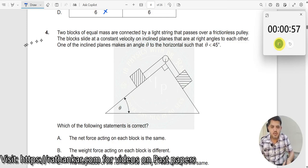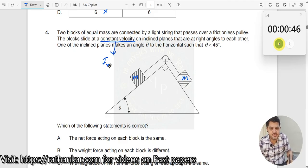Question number 4: two blocks of equal masses are connected by a light string, equal masses. For the frictionless pulley, the two blocks slide at a constant velocity. What do you mean by constant velocity? That means F net is equal to 0. The force acting here, the force acting here is 0 for it. Only then this can move with a constant velocity.